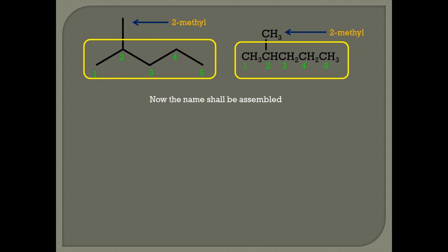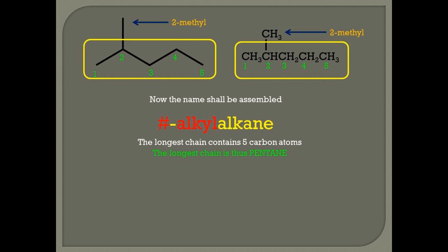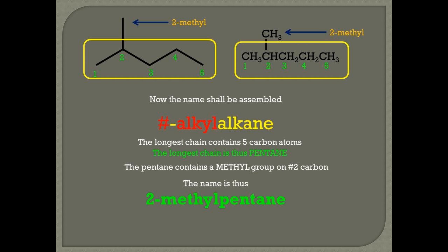Rule five. Now the name shall be assembled from different fragments: a number, the name of the alkyl group, and then the ending which is the parent alkane. The number in this case is two — that's the locant of the methyl group. The alkyl group is methyl, and the alkane is made up of five carbons and therefore it's pentane. This can be thought of as a pentane with a methyl on carbon two. Putting everything together, the name becomes 2-methylpentane.